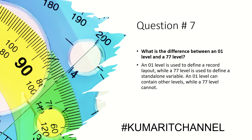What is the difference between 01 level and 77 level in COBOL? A 01 level is used to define a record layout, whereas a 77 level is used to define a standalone variable. An 01 level can contain other subordinate levels such as 02, 03, 05, and so on, while a 77 level cannot contain any sub-levels.